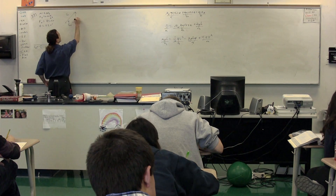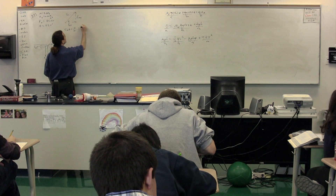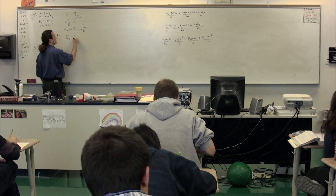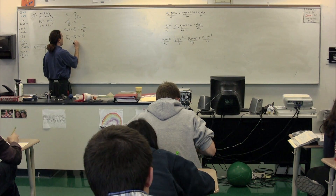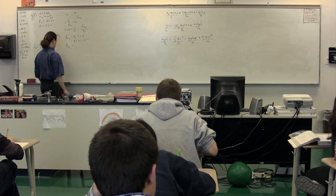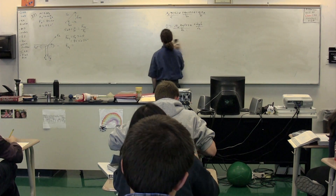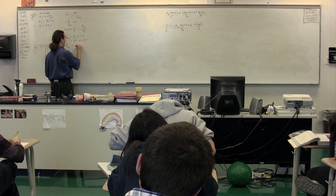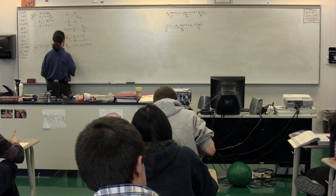We have the force applied in the x-direction and the force applied in the y-direction. We can take the sine of theta — that's equal to opposite over hypotenuse. Opposite is the force applied in the y-direction divided by the hypotenuse, which is the force applied. Therefore, the force applied in the y-direction equals the force applied times the sine of theta. The force applied is 85 times the sine of 55 degrees. Therefore the force applied in the y-direction is 69.63 newtons.